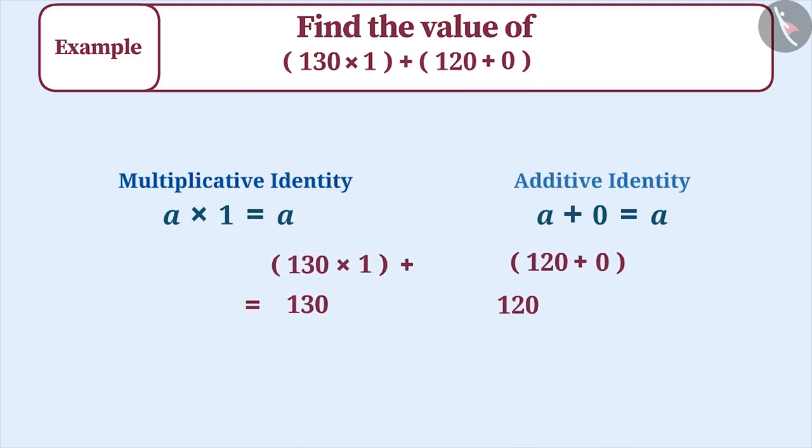130 plus 120 is equal to 250, that is, the solution of a given example is 250. Such examples can be solved easily by understanding the multiplicative identity and the additive identity.